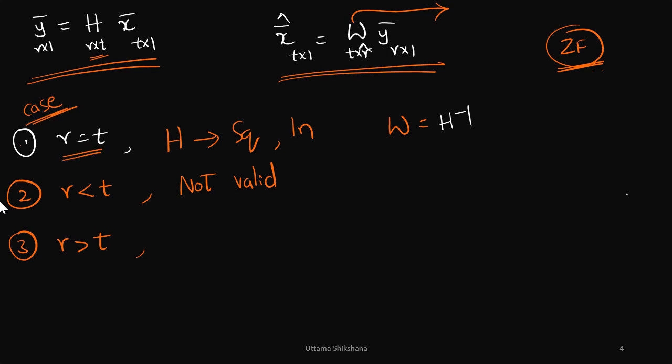Case number one is R equal to T, where the channel matrix is considered a square matrix and it is invertible, for which W equal to H inverse is a solution. We had seen this in the previous video along with its physical interpretation, but in this video we will see the further cases.